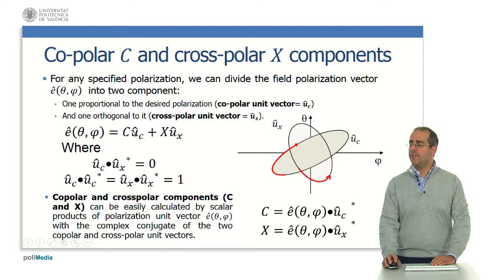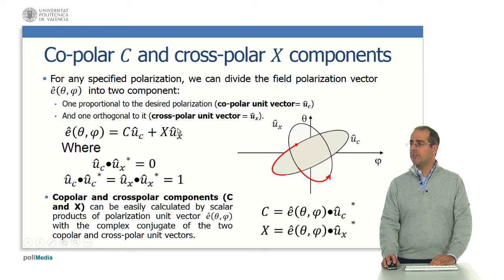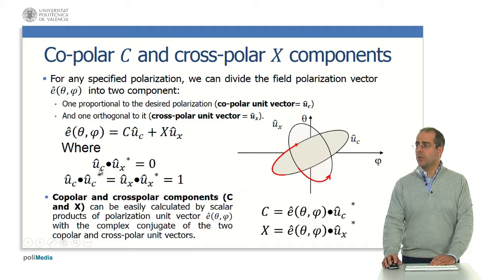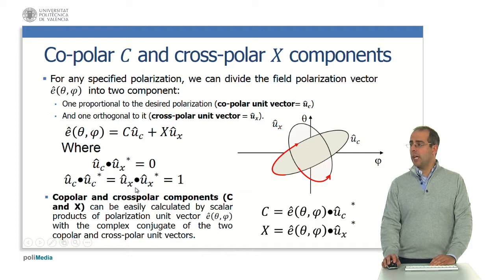For any specified polarization, we can divide the field polarization vector into two components: one proportional to the desired polarization, called the copolar unit vector, and one orthogonal to it, called the cross-polar unit vector. The scalar product of the copolar unit vector with the complex conjugate of the cross-polar unit vector should be zero. Since they are unit vectors, the modulus of each — copolar and cross-polar — should be one.